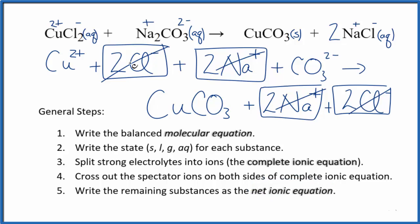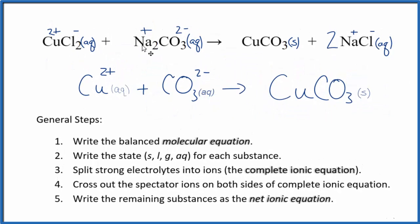What's left, that's the net ionic equation for CuCl2 plus Na2CO3. I'll clean this up and write the states. We'll have our net ionic equation. So this is the balanced net ionic equation for copper 2 chloride plus sodium carbonate.